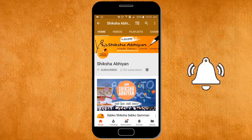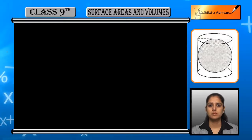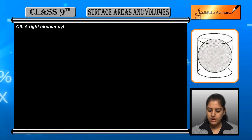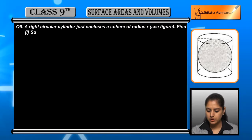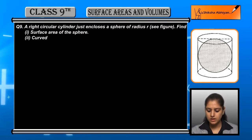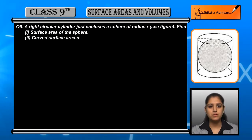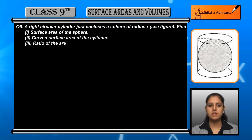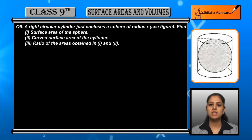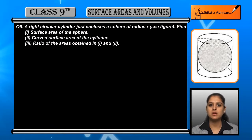Question number 9: a right circular cylinder just encloses a sphere of radius r. You can see in the figure. Find the surface area and curved surface area of the cylinder and the ratio of the areas obtained.